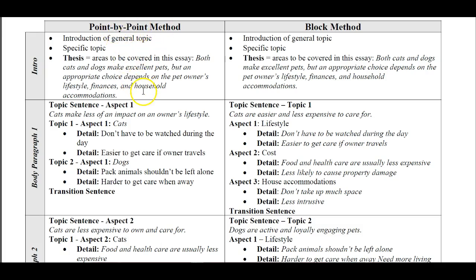Let's take a look at point by point. If you go point by point, the first point is lifestyle. So the topic sentence would be: 'Cats make less of an impact on an owner's lifestyle.' We're not really focusing on cats and dogs separately — we're focusing on the point, which is lifestyle. So for lifestyle, we discuss cats, and then for the same point about lifestyle, we discuss dogs. I would add 'than dogs' to the topic sentence to make it very clear, since if I'm going to mention dogs in this paragraph, I think the word 'dogs' should be in the topic sentence.